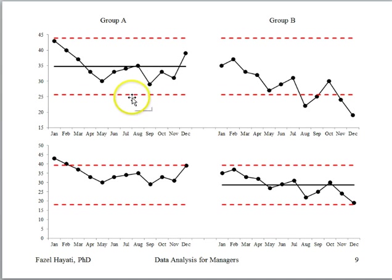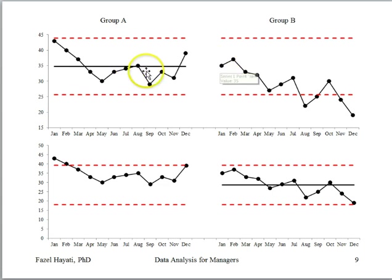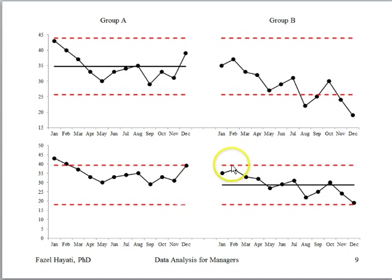Here is group A with its upper and lower control limits. If we extend the limits for group A and assume group B comes from the same system of causes, then all of group B's values must fall within those limits. However, we see that special causes are present, and we conclude that these two groups are not homogeneous and do not come from the same system of causes. Similarly, if we extend the control limits for group B, then group A must behave randomly within group B's upper and lower control limits. Yet again we have special causes, and we conclude that these two groups are not homogeneous.